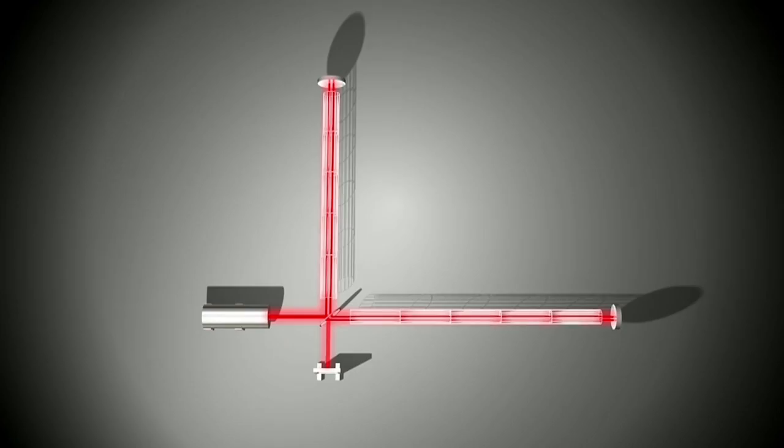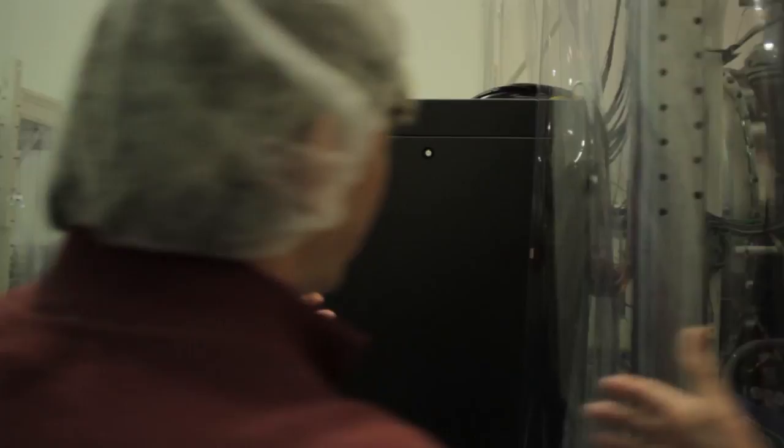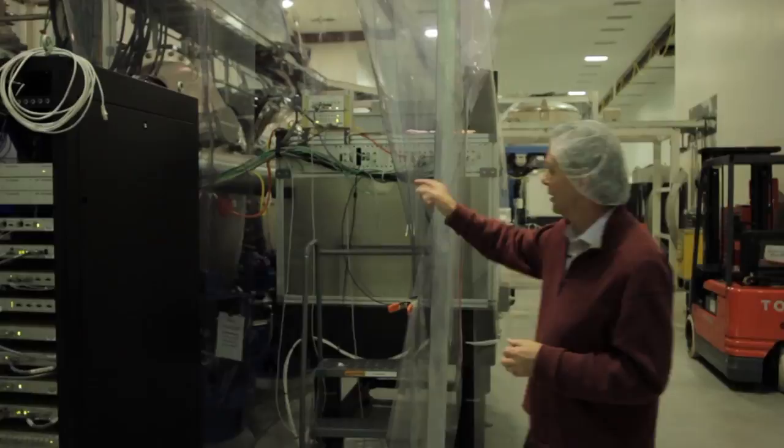So when a gravitational wave passes over the Earth, this is where it's going to be seen. It will pass through, it will change the interference pattern due to this modulation of space-time, and it will be detected right here.